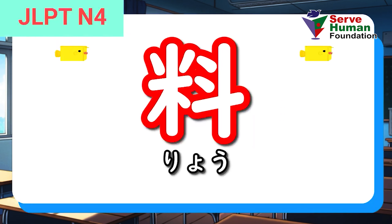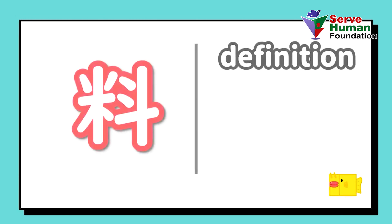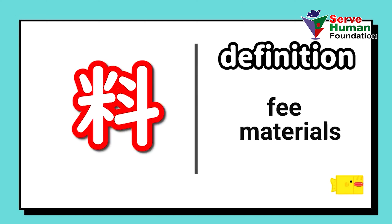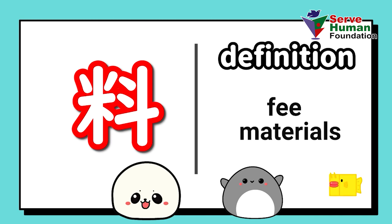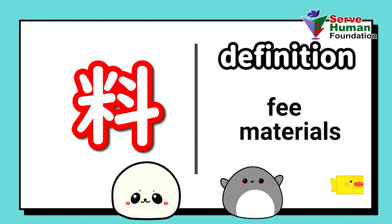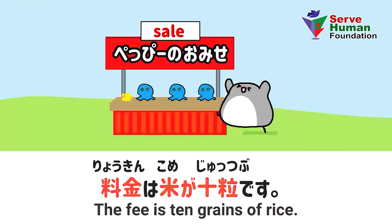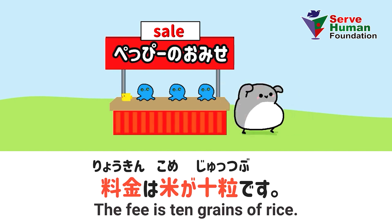Ryo. The definition of this kanji is field, materials. And this image might help you memorize this kanji. Ryo ki wa kome ga jutsubu desu.